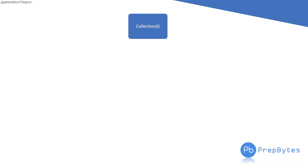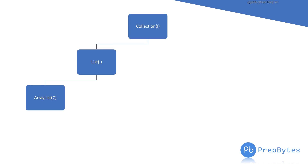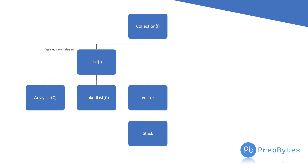Let's have an overview of the topics we have completed till now. We have completed the Collection interface, the List interface, the implementation class ArrayList of the List interface, the implementation class LinkedList of the List interface, and Vector and Stack. The List interface is now completed. Now we will go to Set.